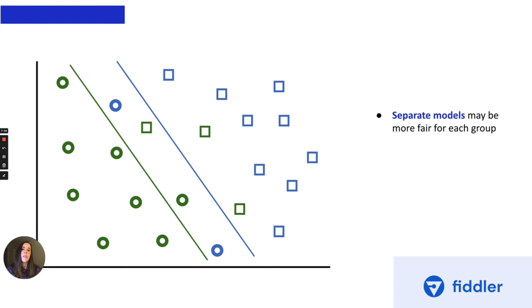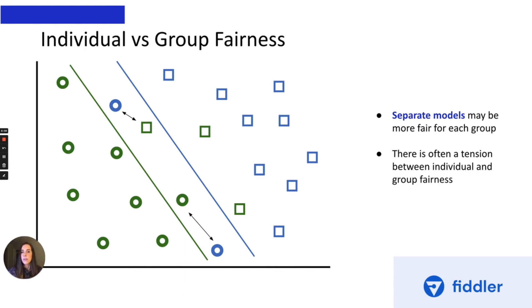Now, in other cases, these new thresholds often leave us with a new problem: that of individual fairness. These individuals are very similar and yet are being treated very differently. There is often a tension between group and individual fairness. Hopefully we now have a better understanding of where bias can be introduced in our machine learning pipeline and the definitions of group and individual fairness. In future videos, we'll introduce the idea of intersectional fairness and go through different metrics to address these problems. Thanks for joining us.